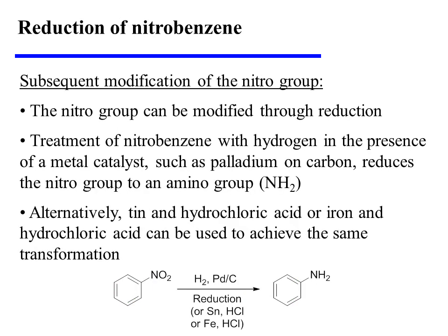It is also worth noting that nitrobenzene and its derivatives can be modified through reduction. Once the nitro group has been placed on the aromatic ring, it can be reduced to an amino group through a variety of conditions. For example, treatment of nitrobenzene with hydrogen in the presence of a metal catalyst such as palladium on carbon will accomplish this reduction. Alternatively, tin and hydrochloric acid or iron and hydrochloric acid will achieve the same transformation.